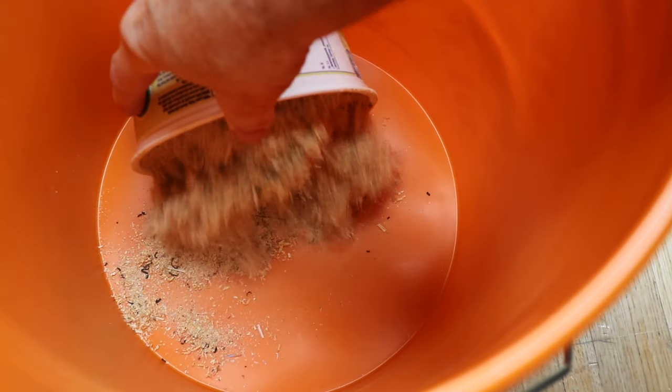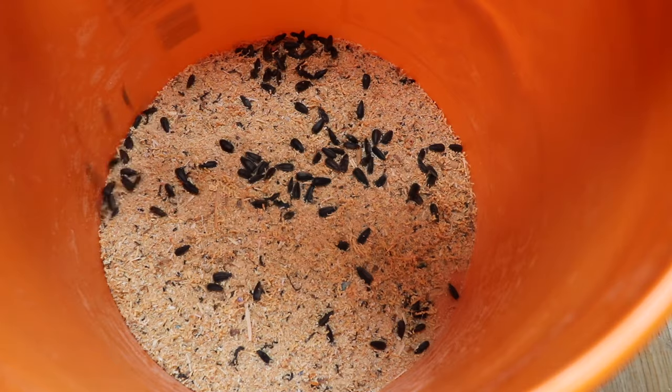So you just put some grass or some sawdust in the bottom, some sunflower seeds and a bit of toilet paper or kleenex for bedding. So let's give this a try in my attic.